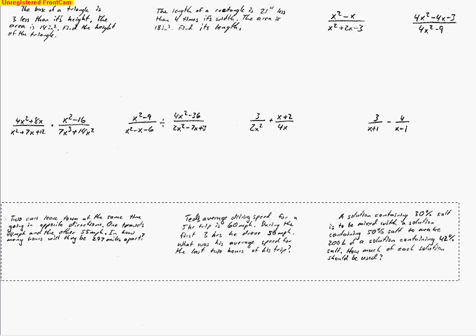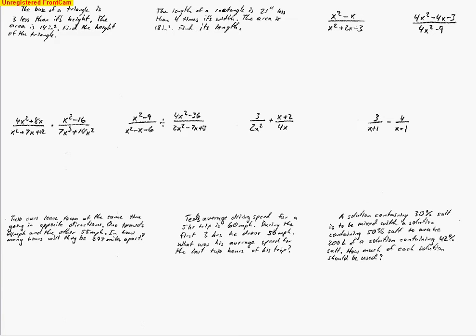This is the lesson for handout D. Looking at the first problem, it's a word problem that asks us to find the height of a triangle given some information. We're not given the exact dimensions of this triangle, so we're going to end up having to write expressions for the ones that are unknown.